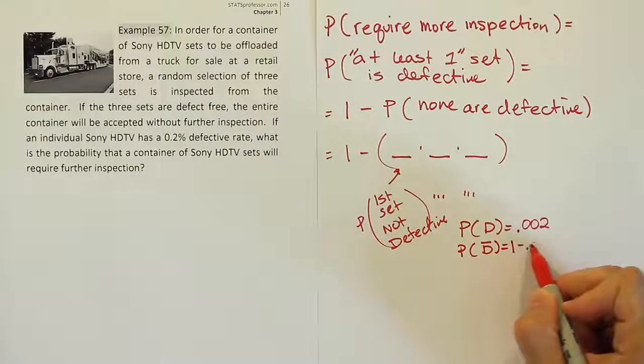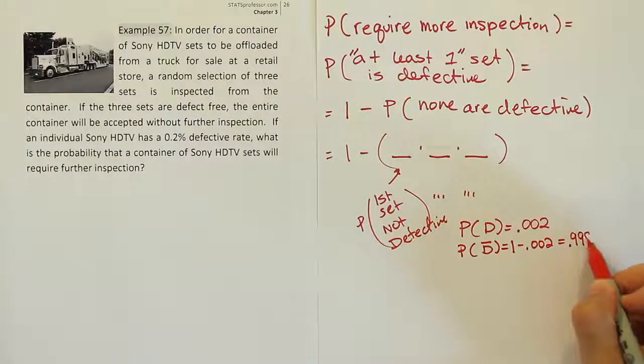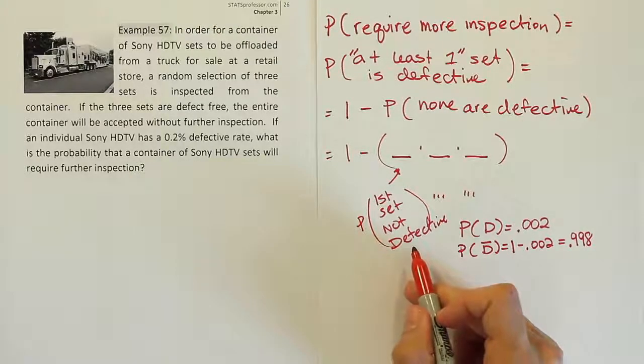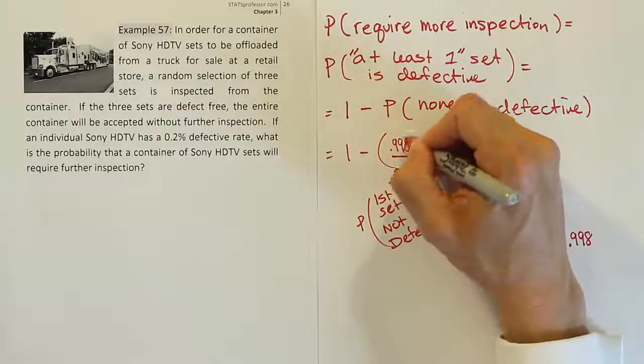What's the chance that the set is not defective then? Well, you do 1 minus 0.002 to find that out. And you will get the answer 0.998, or a 99.8% chance that the set is good or not defective. So what's the probability the first set you take is not defective? The answer is 0.998.